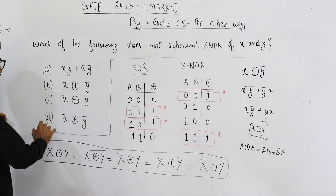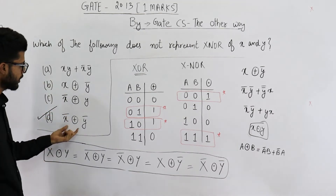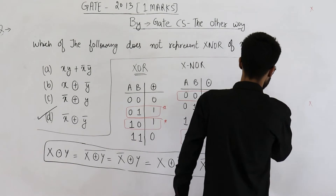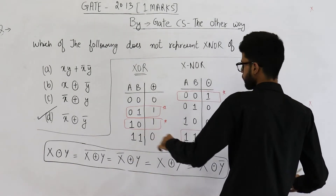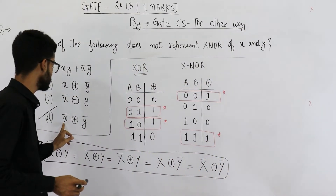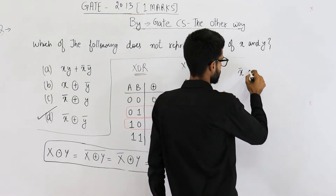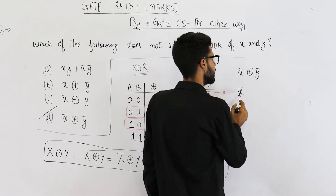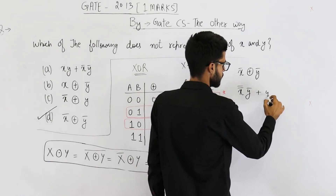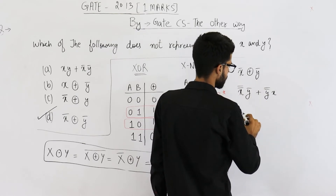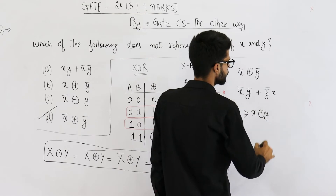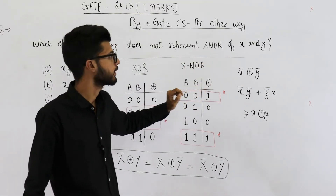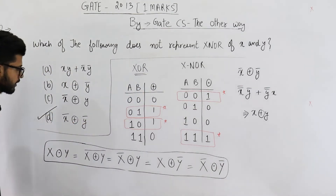Option D does not represent X-NOR. What does it actually represent? You can verify it — it represents X-OR of X and Y. It is X complement X-OR Y complement, X-OR Y complement, X complement X-OR Y complement. Expanding this X-OR gives Ā​B + B̄​A, which is equivalent to X X-OR Y. So option D represents X-OR of X and Y, but we want X-NOR. Therefore option D is the answer.